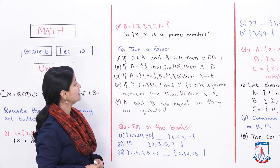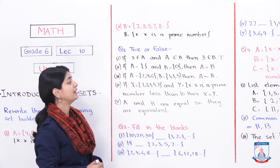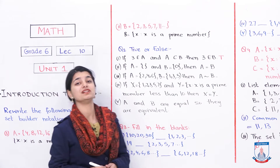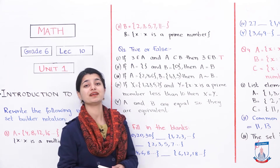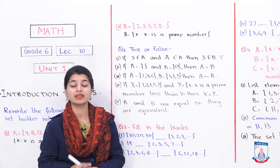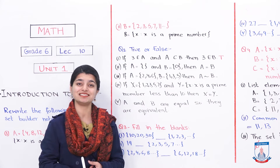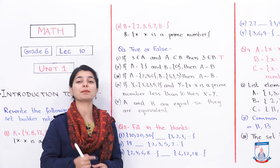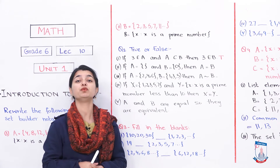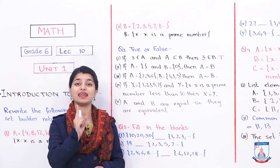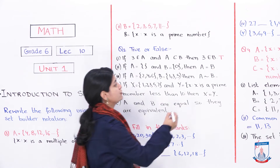The second statement: if A is an empty set and B equals {0}, then A equals B. No. There is nothing in the empty set — it is a null set. But set B contains the element 0, which makes it a unit set with one element. So A and B are not equal. This statement is false.